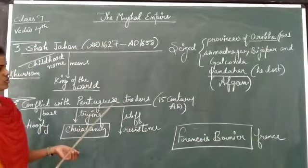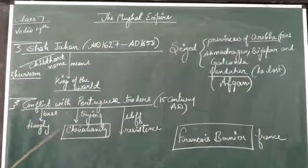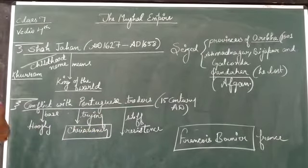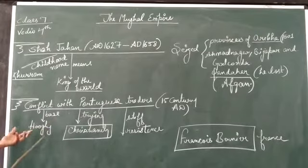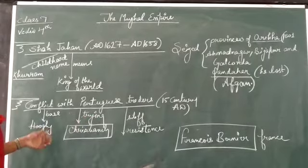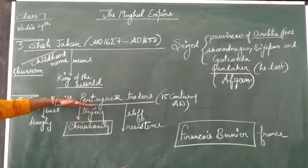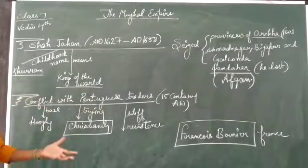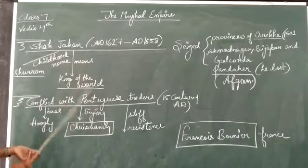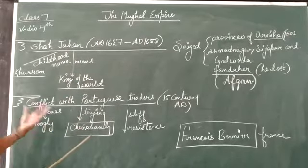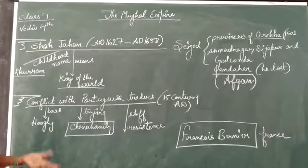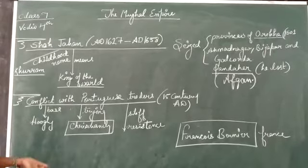Now, if we talk about conflict with Portuguese traders during his rule, the Portuguese established their trade on the side of Hooghly River. The Portuguese started to convert people and were emphasizing them to convert into Christianity. When Shahjahan got to know about this thing, he threw back the Portuguese and changed everything, making them understand about Christianity, those who were converting.